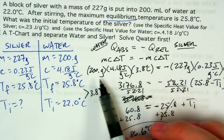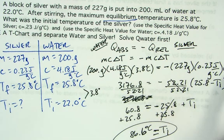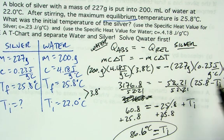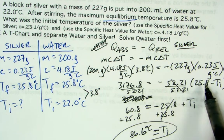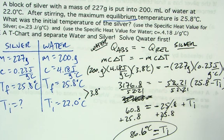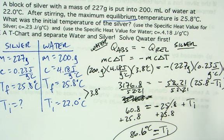Once you have all the information in the original formula, you could solve it a different way — for example, by distributing the 52.21 first — and end up in the same spot. I just chose to solve it a slightly different way. Thanks for watching, and I hope this helps you solve heat calculations when you've put a piece of metal into water.